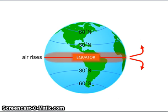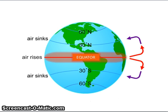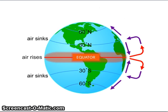As we know, the Sun's rays are concentrated along the equator. At the equator, air near the surface is warmed — it expands and begins to rise. As the air rises and moves away from the equator, it cools. At about 30 degrees north or south of the equator, the now cooler and denser air sinks back towards the Earth's surface. Some of the air flows back towards the equator and some towards the poles.